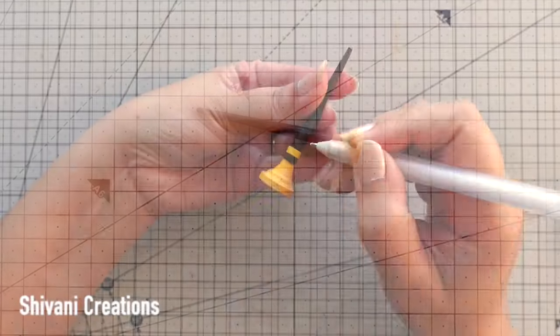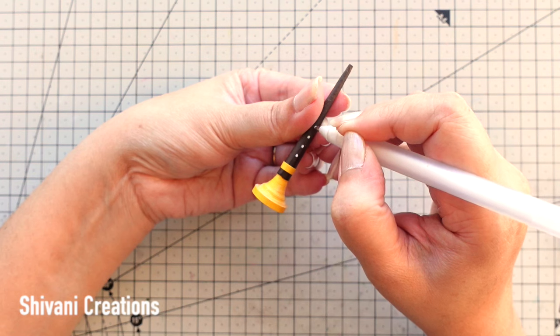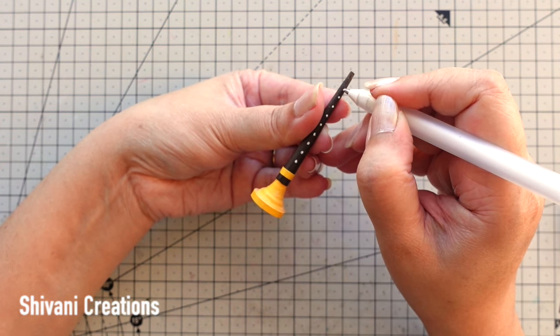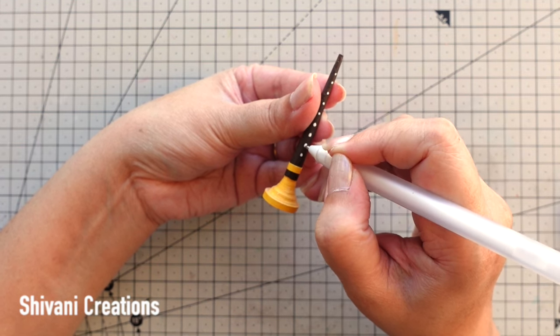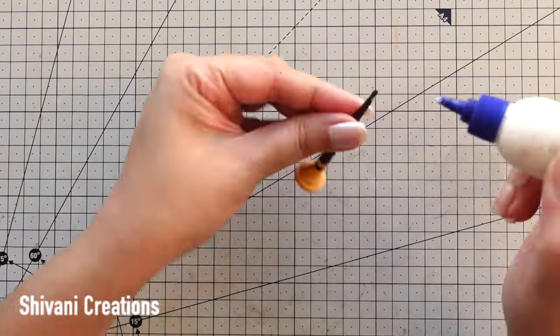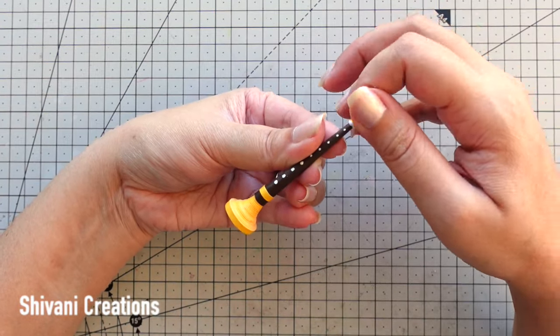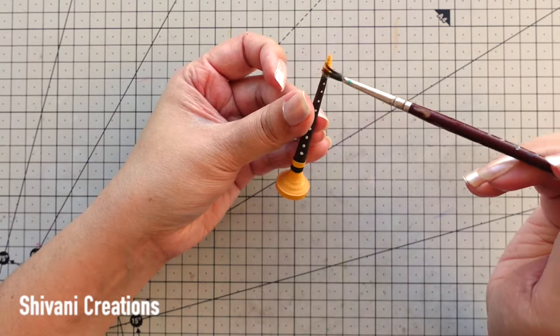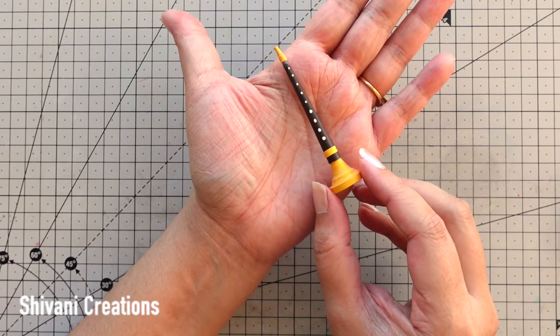Like this, allow it to dry. Then I am just creating some holes on this using white color marker, just to pretend and to look like a real shahnai. Then on top I am adding one more small cone which is made using 1/6th strip of golden color. Like this, and the super cute shahnai is also ready. Very pretty.